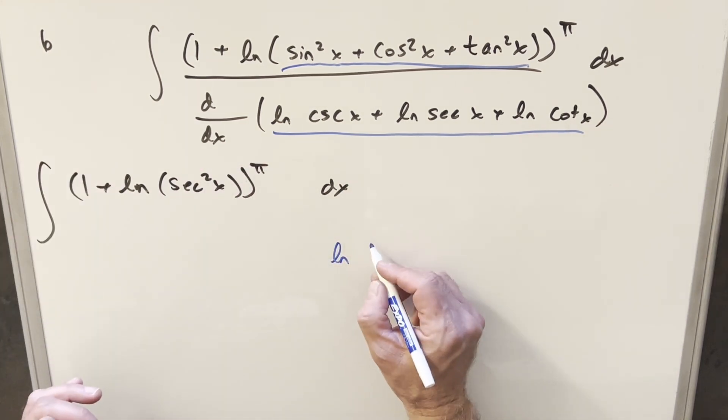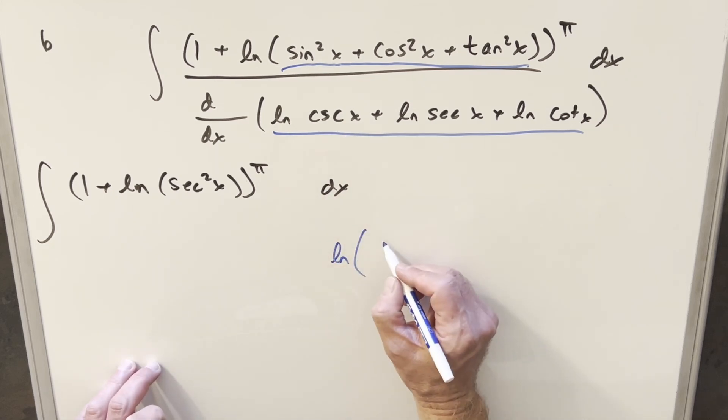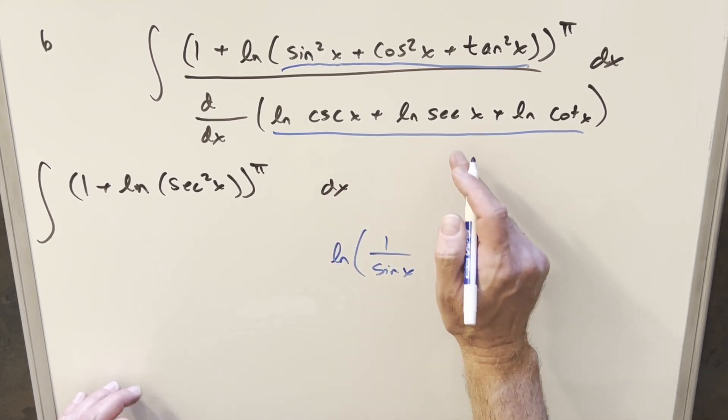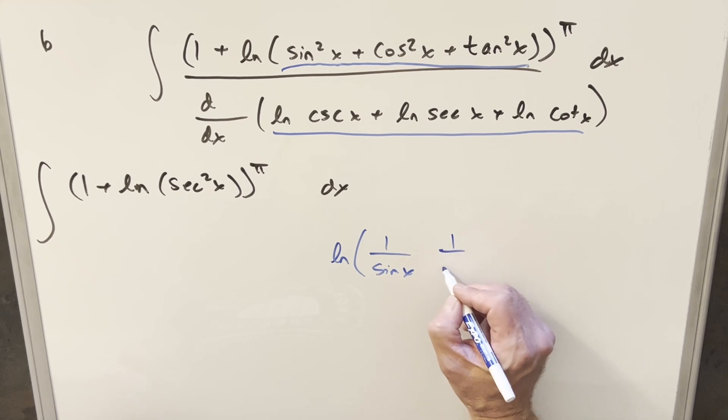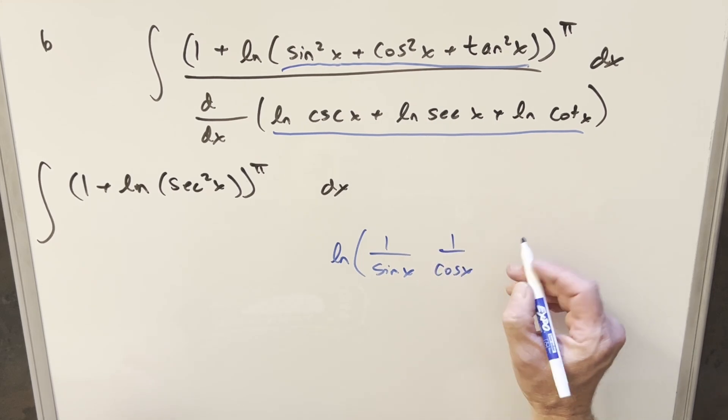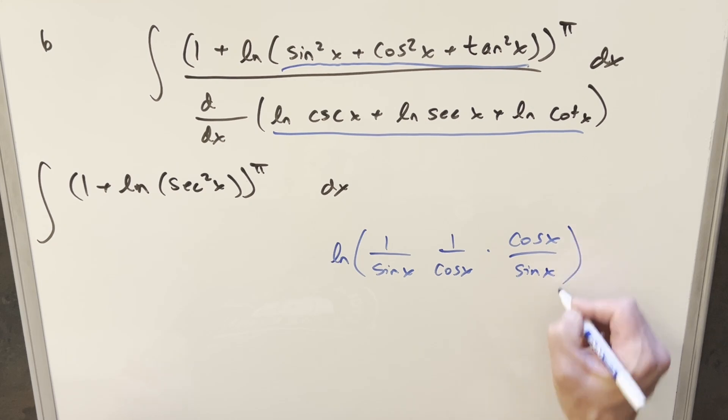So putting this all into one expression in terms of multiplication, this one's going to be 1 over sine x. This one is going to be 1 over cosine x. And cotangent x is going to be just cosine x over sine x. But then I can cancel cosine with cosine here. We'll have 1 over sine squared x.